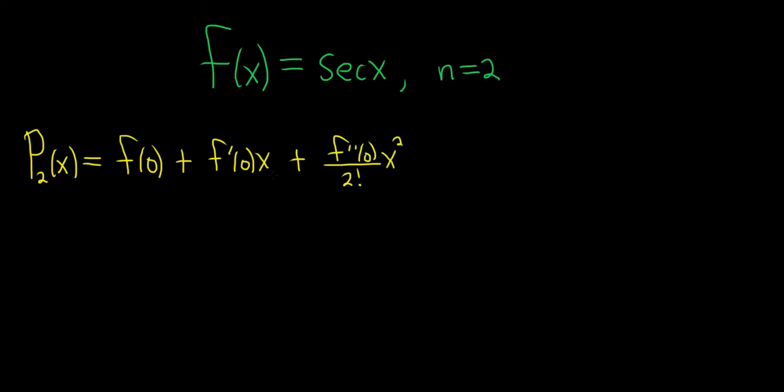And this is not so hard to memorize. You can think of f of 0 as being divided by 0 factorial, and you can think of there being an x to the 0 here. And then you can think of the first derivative as being divided by 1 factorial, and this is x to the 1. And then you see the second derivative matches the 2 factorial, and it's an x squared.